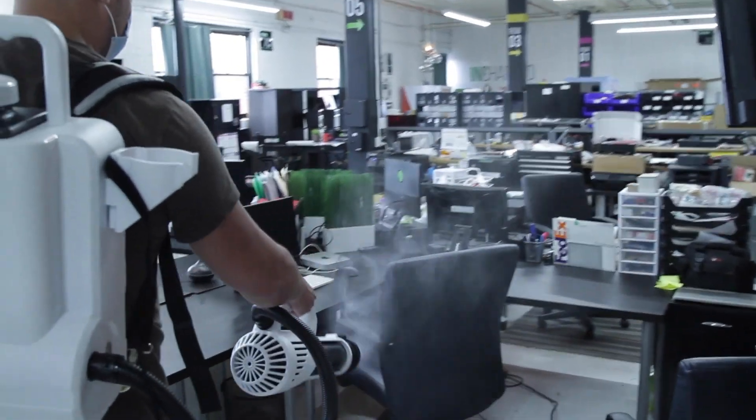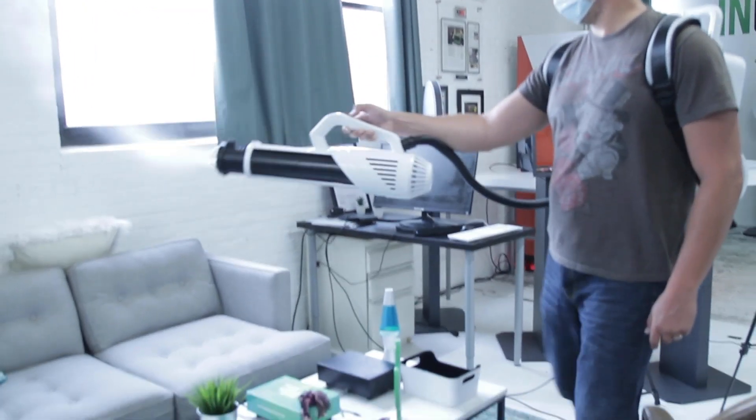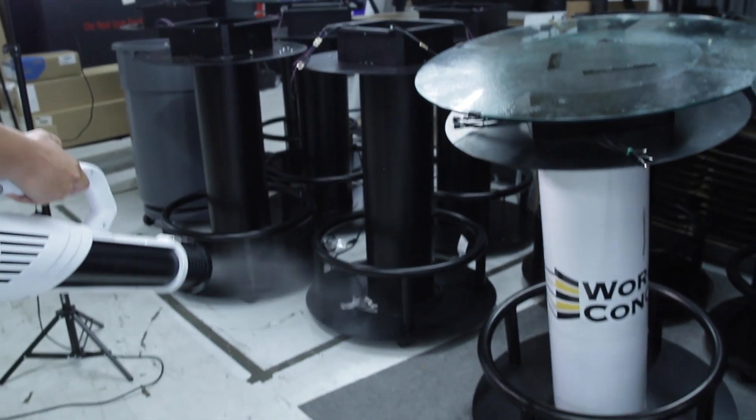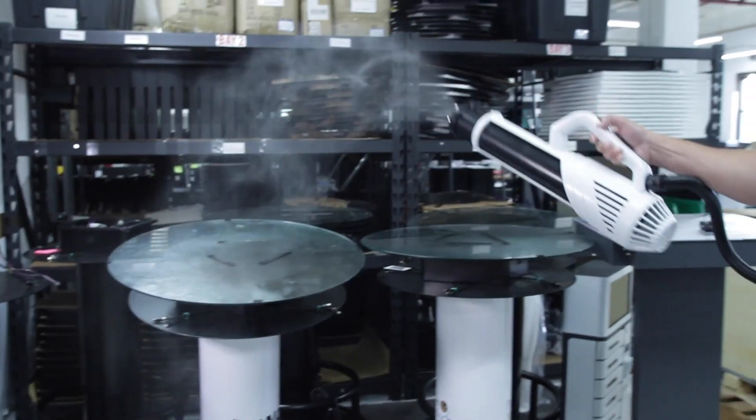Because the electrostatic sprayer charges the cleaning solution, you only need a light covering of surfaces for proper treatment. Be sure and direct your spray under tables and into corners so your entire space is treated.